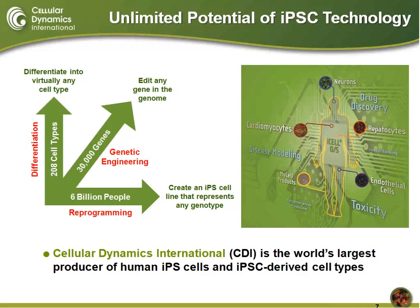To set the stage here, induced pluripotent stem cell technology, or iPSC technology, has really ushered in a new age of opportunity for biomedical research. The concept of generating a self-renewing and expandable iPSC cell population from any genetic background — reprogramming an adult cell from any one of the six billion people out there in the world back to a pluripotent stem cell state — is truly remarkable. Furthermore, that resulting reprogrammed iPSC line can be differentiated or turned into virtually any cell type, and there are over 200 of those in the human body.